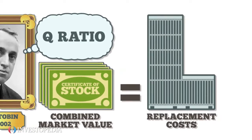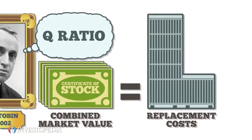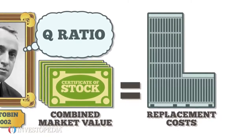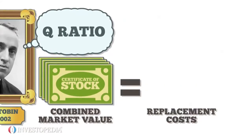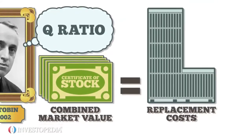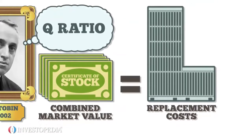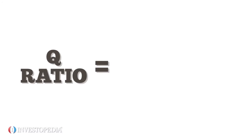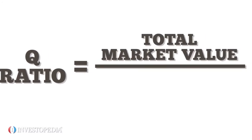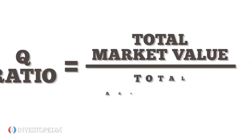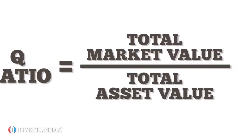In other words, the value of a United States firm should be equal to what it would cost to start that same firm today. A Q-Ratio is calculated by dividing the total market value of firms by their total asset value.